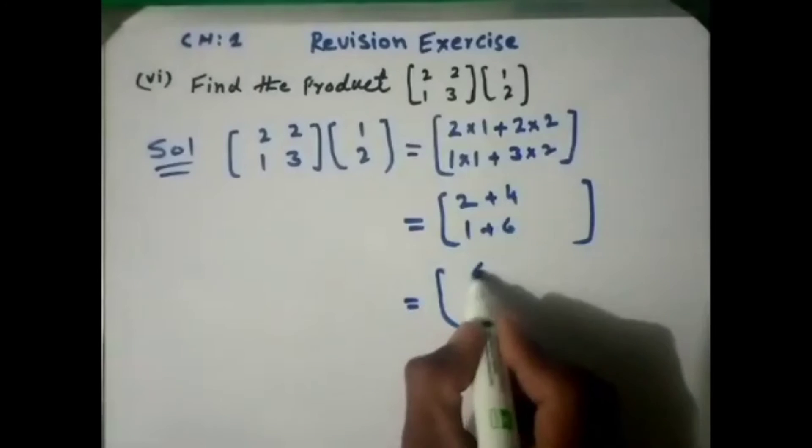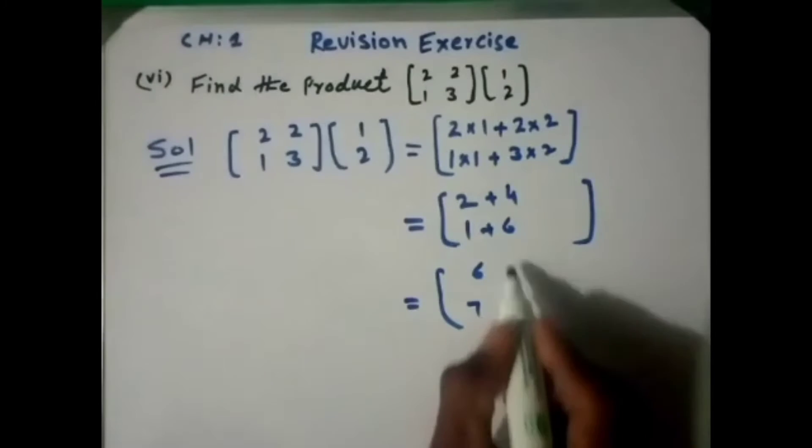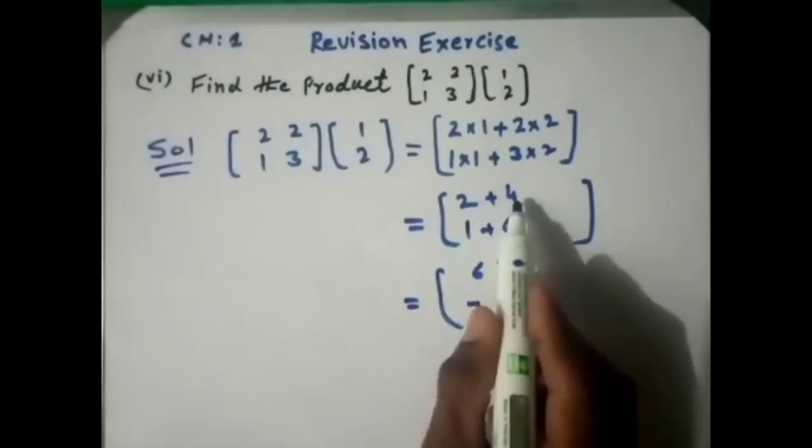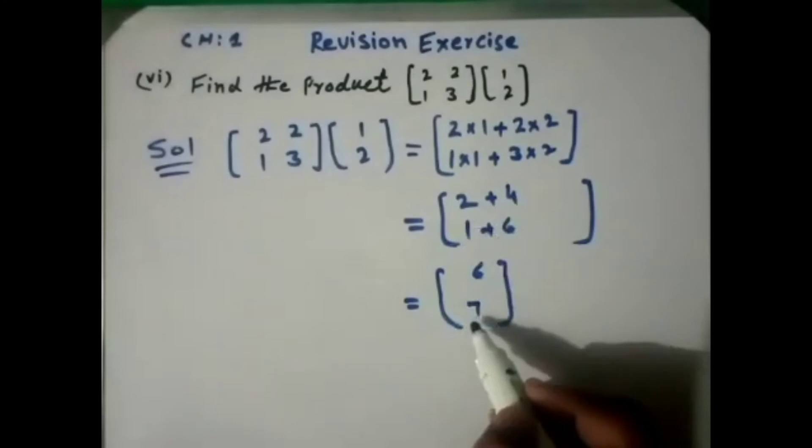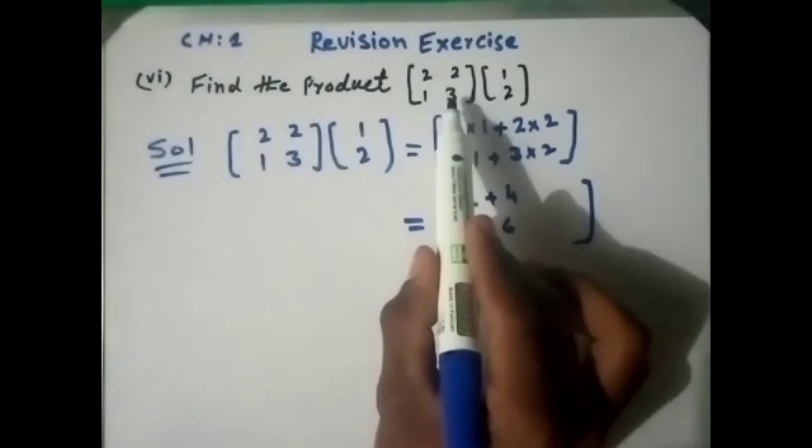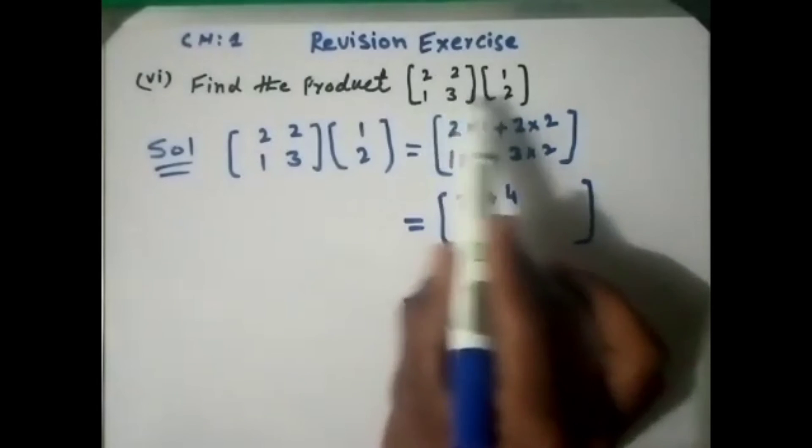6 and 7. So 2 plus 4 equals 6, 1 plus 6 equals 7. This result is the product between the two matrices.